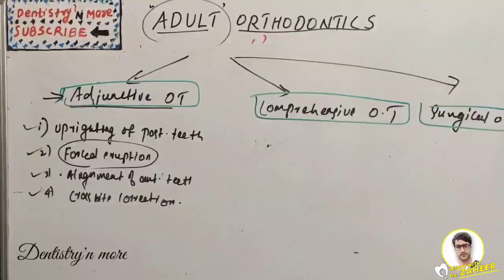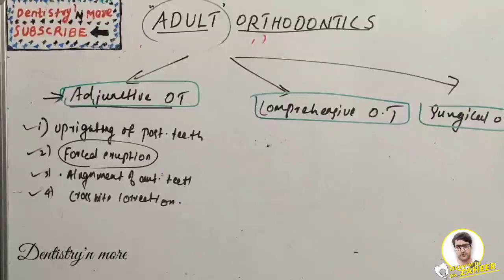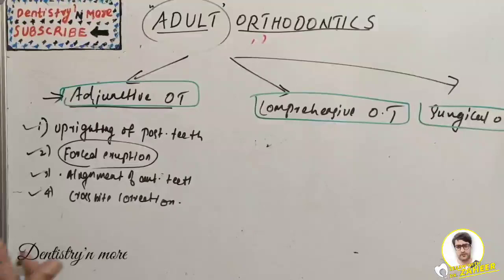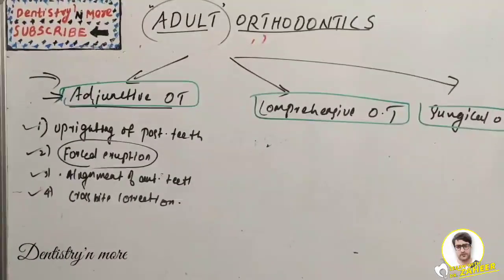The basic goals of adjunctive treatment are to facilitate restorative treatment by positioning teeth so that more ideal and conservative techniques can be used, to improve periodontal health by eliminating plaque-harboring areas and improving alveolar ridge contour, and to establish a favorable crown-to-root ratio and position teeth so that occlusal forces are transmitted along the long axis of teeth.